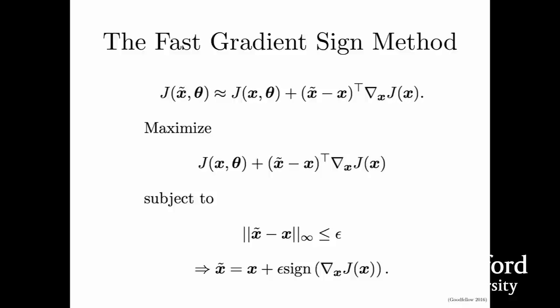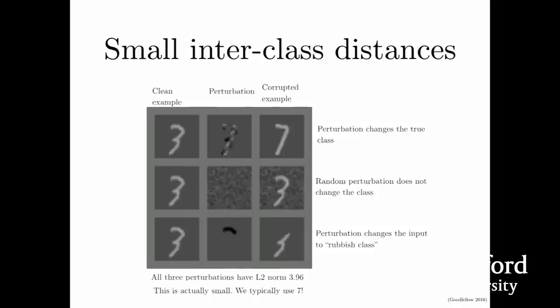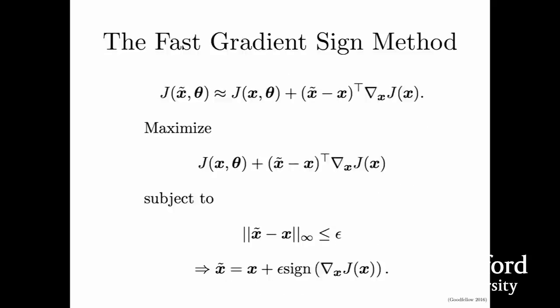One very fast way to build an adversarial example is just to take the gradient of the cost used to train the network with respect to the input, and then take the sign of that gradient. The sign enforces the max norm constraint—you're only allowed to change the input by up to epsilon at each pixel, so the sign tells you whether to add or subtract epsilon in order to hurt the network. You can view this as using the observation that the network is more or less linear to motivate building a first-order Taylor series approximation of the neural network's cost, and then maximizing that subject to the max norm constraint. This gives us what we call the fast gradient sign method. If you want to start making adversarial examples quickly, or train on adversarial examples in the inner loop of learning, this method will make them very quickly.